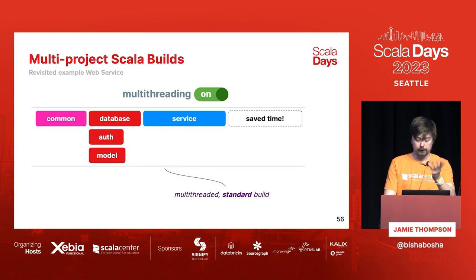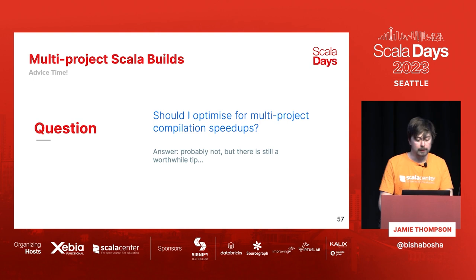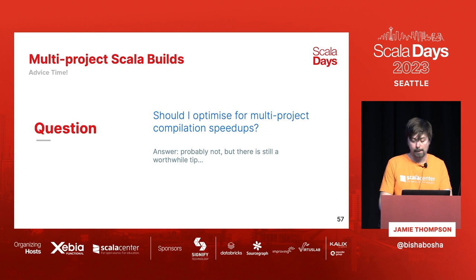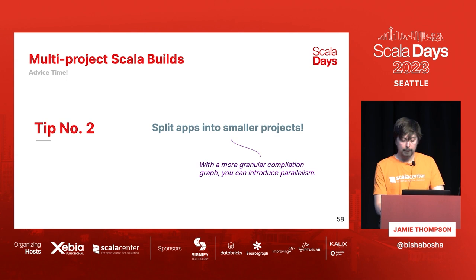You might ask: should I optimize by splitting into so many modules that everything is super parallelized? I would say no, because there's overhead when splitting into smaller and smaller modules, and you're limited by the number of CPU cores. Don't go too crazy. But still, as a second tip: you can definitely split your apps into smaller projects because it makes code easier to understand and you might benefit from some parallelism.